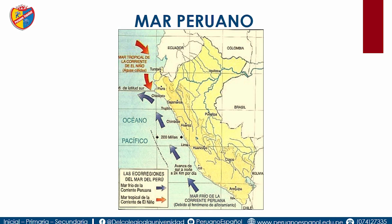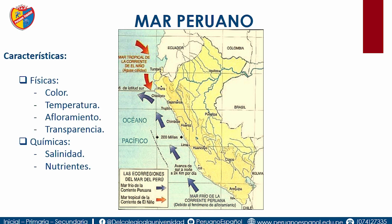¿Cuáles son las características que presenta el mar peruano? Son dos: físicas y químicas. En las físicas tenemos el color. ¿Por qué es verdoso? Por la presencia del fitoplancton. ¿Y por qué de color marrón, rojizo o amarillo lechoso? A eso se le da el nombre del fenómeno del aguaje, también llamado marea roja.